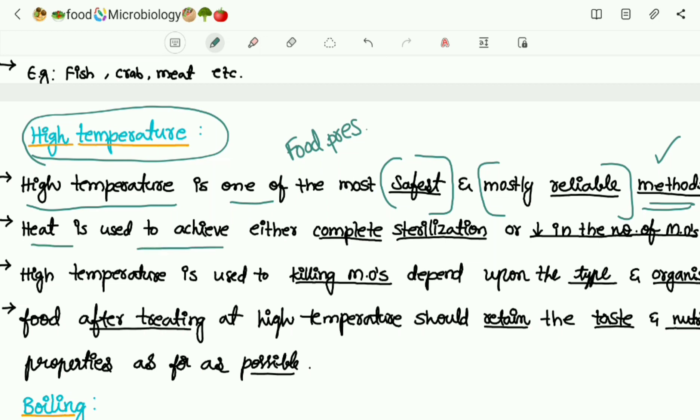Heat is used to achieve either complete sterilization or decrease the number of microorganisms present in the food. High temperature is used to kill microorganisms depending upon the type of that microorganism, because there are some bacteria and microorganisms which can tolerate high temperature as well.